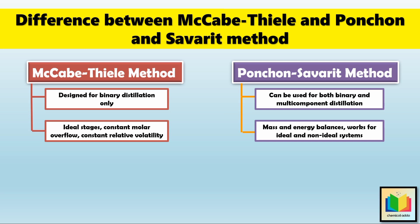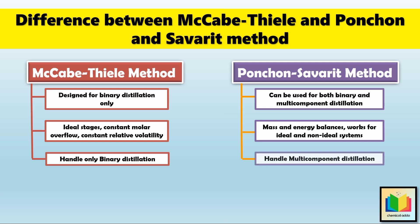The next point for differentiation is the type of system each method can handle, which is one of the most significant differences. The McCabe-Thiele method handles only binary distillation — a two-component system. But the Ponchon-Savarit method can also handle multi-component distillation systems, making it versatile for complex separations involving more than two components. Next, we look at how these two methods differ in graphical representation to determine the number of trays needed for a distillation column.